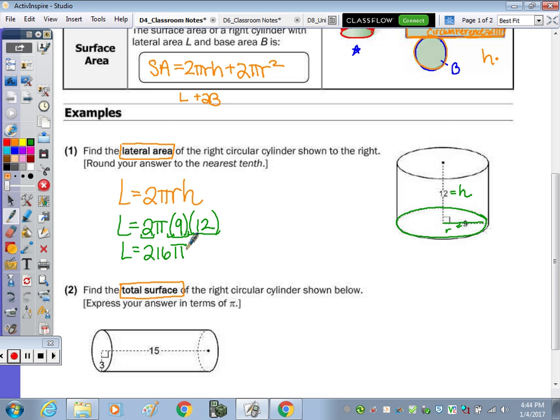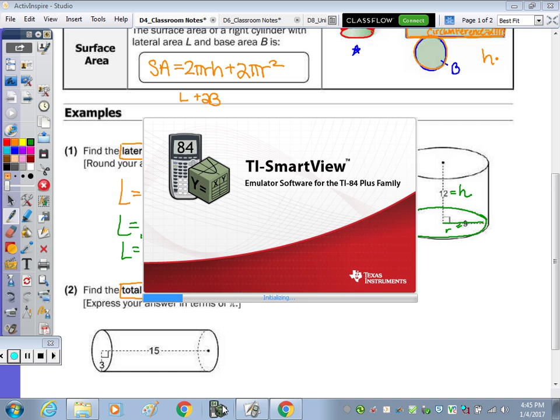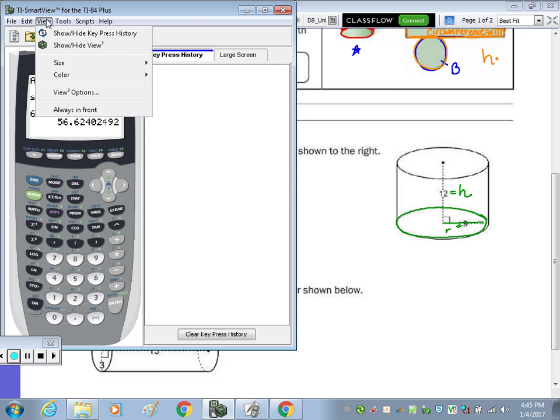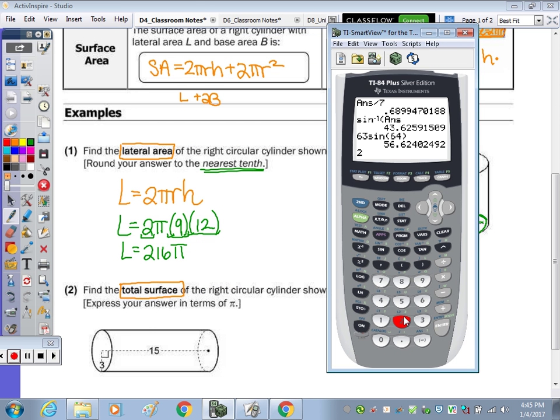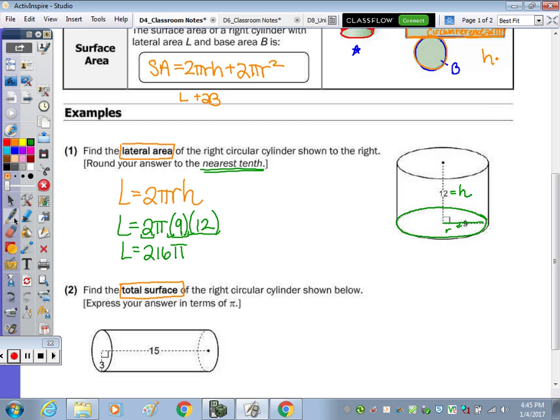Now this is an exact answer, and this is an answer in terms of π. If we need to find the decimal as we're rounding to the nearest tenth, we need to get out our calculators and type in 216π. So 216π is 678.584. Now rounding to the nearest tenths place, because there's an 8 to the right of the 5, it's going to round to 0.6. So our answer, our lateral surface area, is approximately 678.6. And because we're talking about area, area is still measured in square units. Because they didn't give me any units, I'm just going to write units squared.